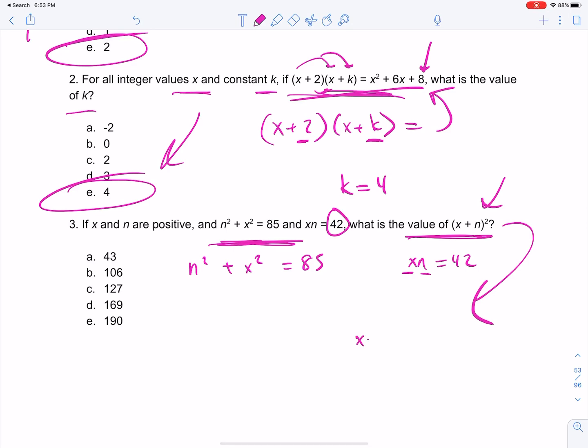Here's how we can make it much easier on ourselves. x plus n squared, right? x plus n times x plus n. Here's what we do. First is x squared, outer is xn, inner is nx, and n times n is n squared. So what do we have? x squared, and xn and nx are the same thing, so we have two of those, 2xn plus n squared.